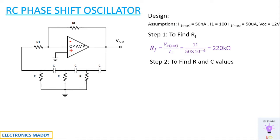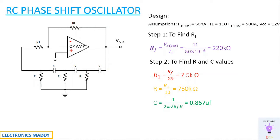To find the values of R and C, we will be finding R1 = Rf / 29, because the open loop gain A — the product of A·β — should be greater than or equal to 29. Substituting the values, you'll get R1 = 7.5 kilo ohm. R is equal to R1 / 10, that is 750 ohms, and C is equal to 1 / (2π · √6 · f · R), giving 0.867 microfarad. These are the values we'll be considering in our simulation.